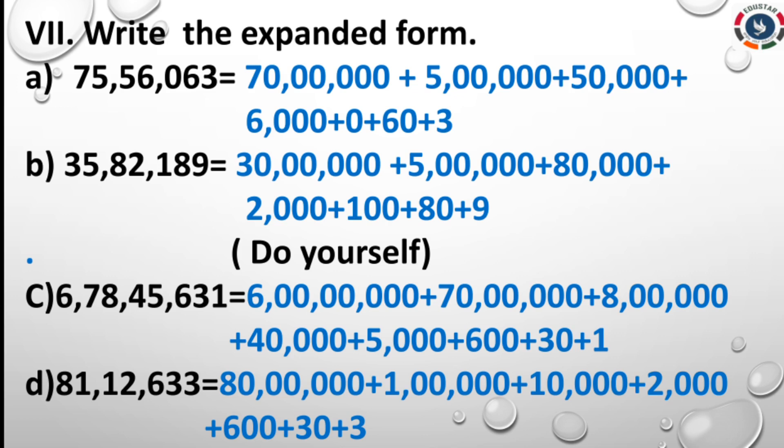Check once again. 6,78,45,631 = 6 crore + 70 lakh + 8 lakh + 40,000 + 5,000 + 600 + 30 + 1. And D: 81,12,633 = 80 lakh + 10 lakh + 10,000 + 2,000 + 600 + 30 + 3.